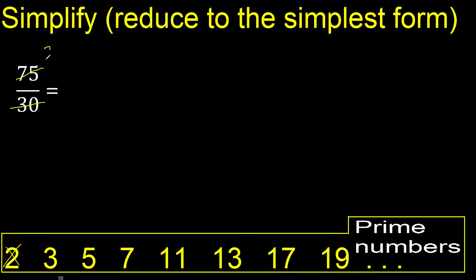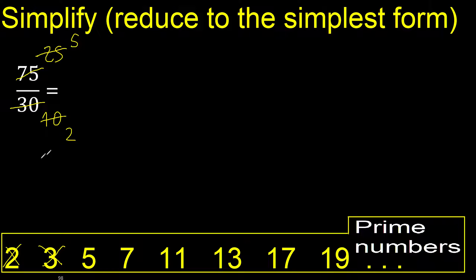Divided by 3: 25 divided by 3 — no, 10 cannot be divided by 3. But divided by 5: 25 divided by 5 is 5, and 10 divided by 5 is 2.